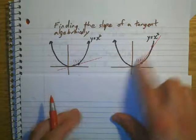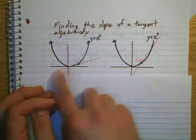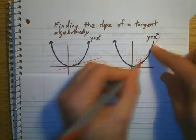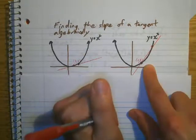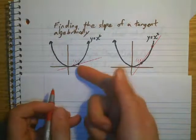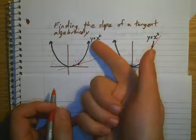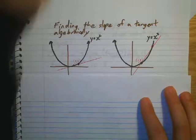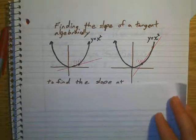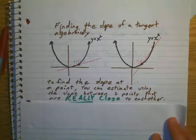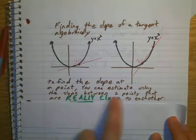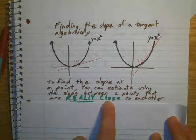If I pick a point over here, my slope here is really shallow compared to if I pick a point way up here — this slope is much steeper. So how am I supposed to find an accurate slope at one point, at 1, 1? Well, there's an algebraic way to figure this out. To find the slope at one point, you can estimate it using two points that are really, really, really close to each other.